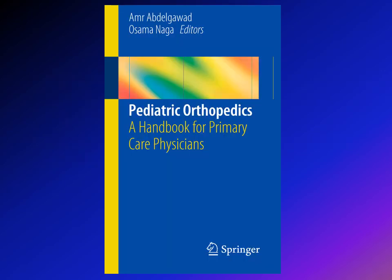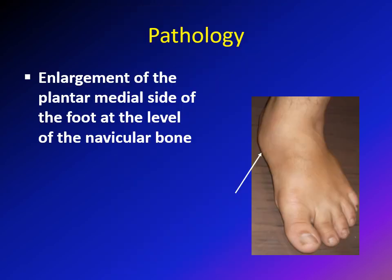A good source you can use is a book written by myself and Dr. Naga. The pathology in cases of accessory navicular is enlargement of the medial side of the plantar aspect of the foot at the level of the navicular bone. You can see this kid has an accessory navicular — there is an enlargement at the level of the navicular bone at the medial plantar part of the foot.